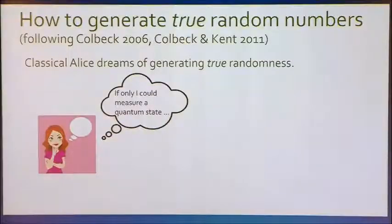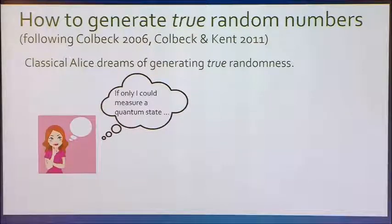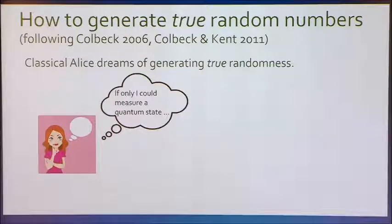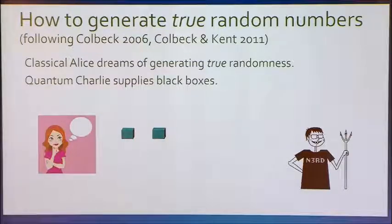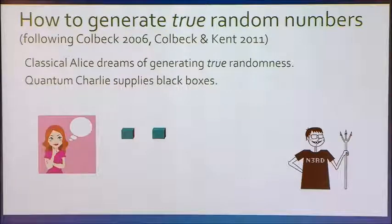To begin with the general scenario: we have a classical user who wants to generate truly random numbers. She's looking for a collection of numbers that is nearly uniformly random up to some negligible error and is unknown to any outside party. We're setting the bar pretty high. In addition, she's a strictly classical user and does not trust quantum operations at all. We go all the way to the extreme in terms of trust and say this classical user Alice will not trust quantum operations unless she can verify them through strictly classical means.